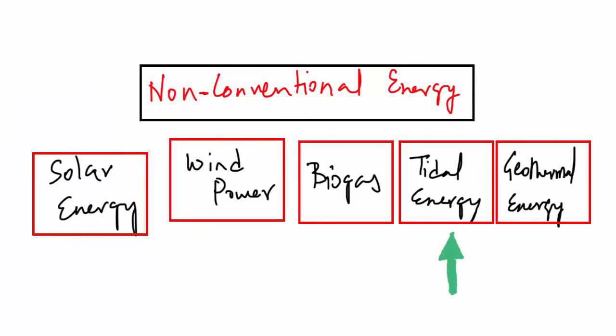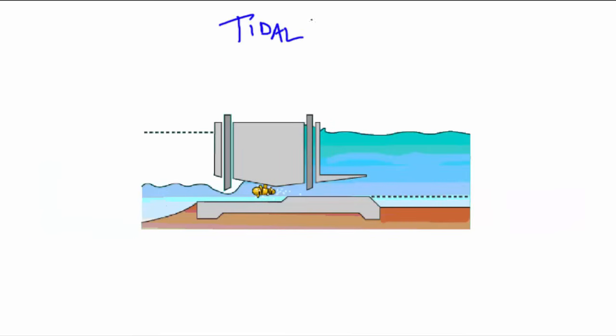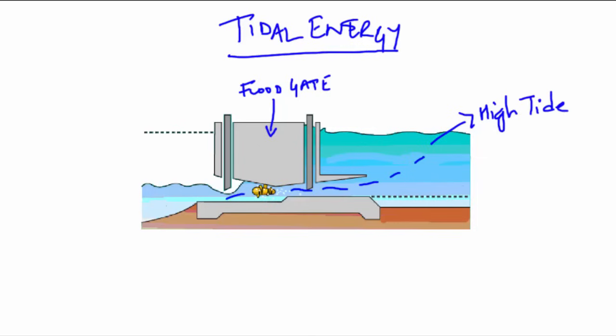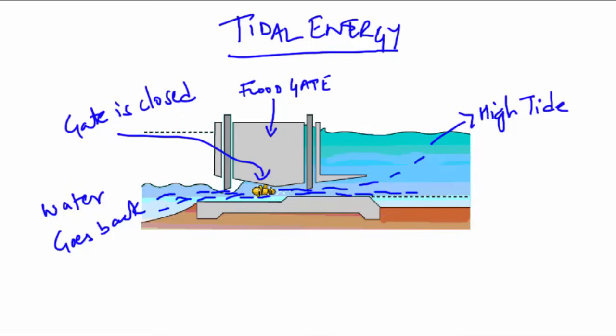The fourth non-conventional energy source is tidal energy. Flood gate dams are built across inlets. During high tide, water flows into the inlet and gets trapped when the gate is closed. After the tide falls outside the flood gate, the water retained by the flood gate flows back to the sea via a pipe that carries it through a power generating turbine.